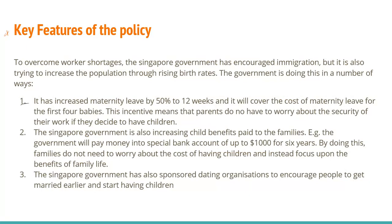Let's look at some key features of this policy. To overcome worker shortages, the Singapore government has encouraged immigration — people coming into the country — but it is also trying to increase population through rising birth rate. The first way is that it has increased maternity leave by 50% to 12 weeks, and it will cover the cost of maternity leave for the first four babies. This incentive means that parents do not have to worry about the security of their work if they decide to have children.